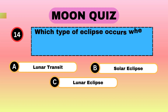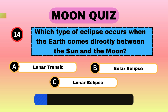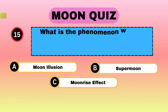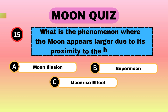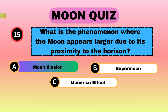Which type of eclipse occurs when the Earth comes directly between the Sun and the Moon? Lunar eclipse. What is the phenomenon where the Moon appears larger due to its proximity to the horizon? Moon illusion.